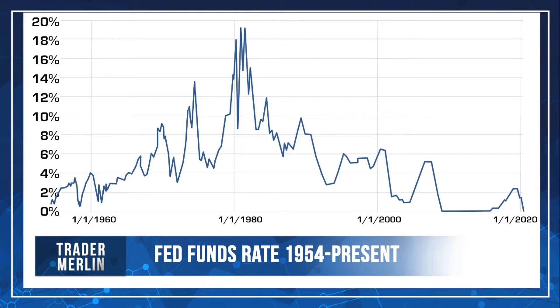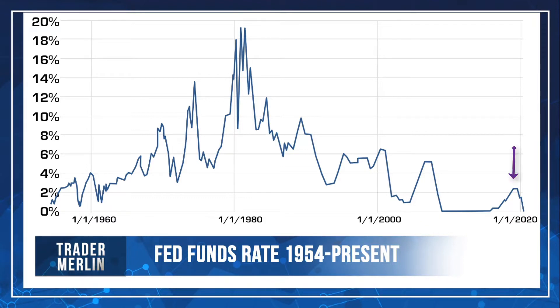Now of course it's currently at zero, so it begs the question: how low can it go? On the hard right edge you can see how it's aggressively fallen from roughly about two and a quarter percent all the way to zero in just a couple of months. That's because the Fed has gotten very aggressive at lowering those rates because they want to stimulate the economy.